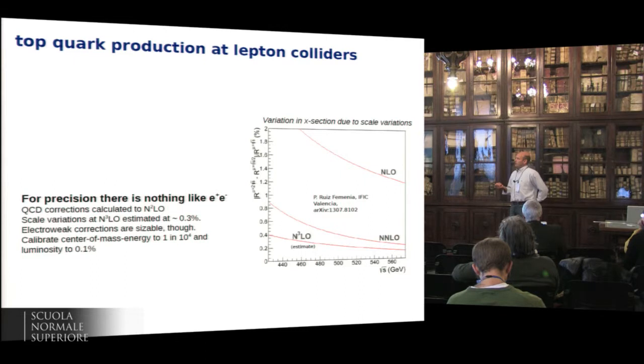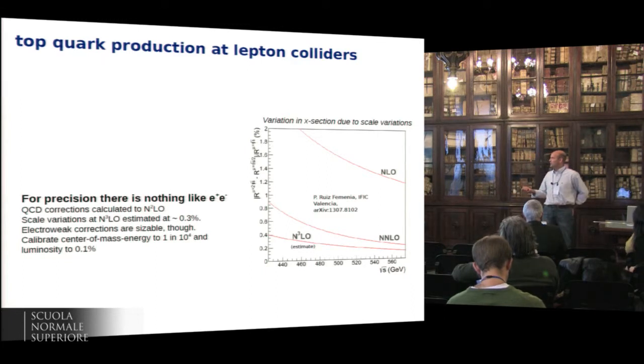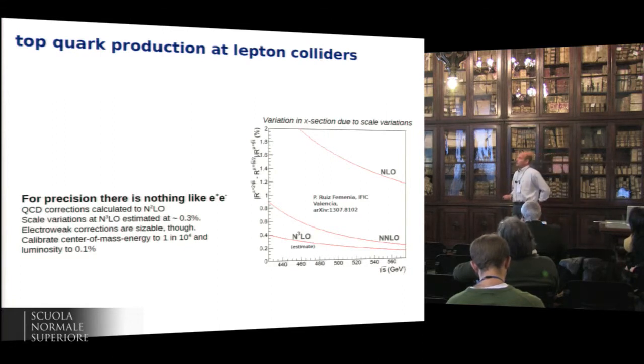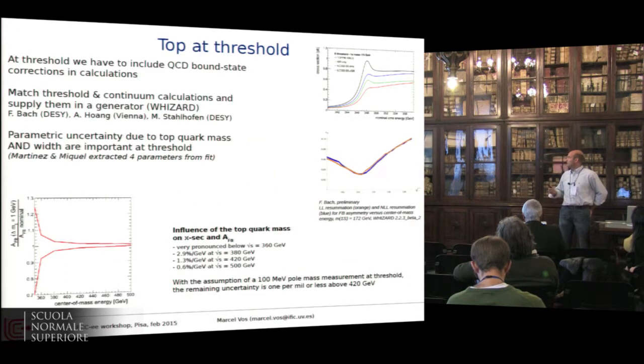A basic asset of lepton colliders is that we can calculate production rates to a precision that we can't dream of at the LHC. We have a 5% uncertainty on the Tt bar cross-section at the LHC now. It's a major step forward with the NNLO calculation. At the lepton collider, that should be easy. So this is around 500 GeV, we've tried to estimate next to leading order, next to next to leading order, and cubed corrections. And it really goes down to per mill level.